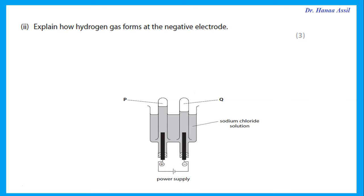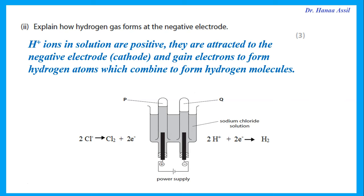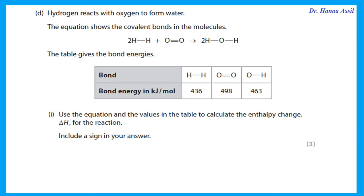Explain how hydrogen gas forms at the negative electrode. In solution we have H⁺ ions, Cl⁻ ions, and Na⁺ ions. The H⁺ ions are positive and are attracted to the negative electrode (cathode). At the cathode, H⁺ ions gain electrons to form hydrogen atoms, which then combine to form hydrogen molecules, H₂.